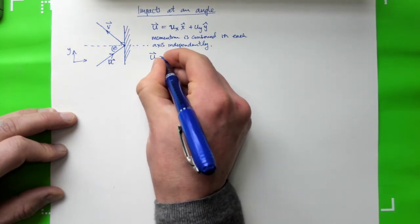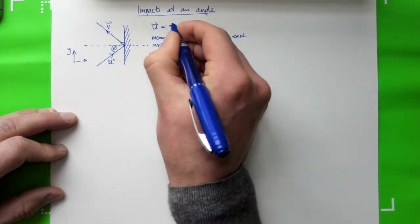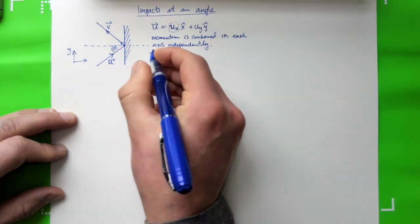So let's write down U again. What is this term here, Ux? Well, we actually know it because we know this angle.